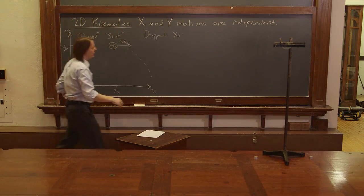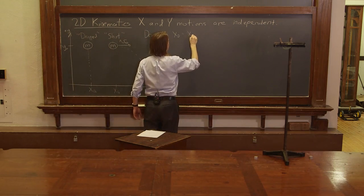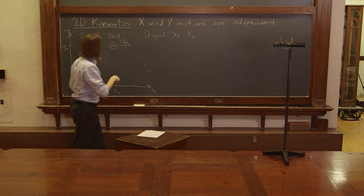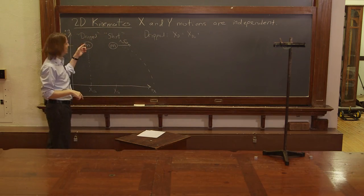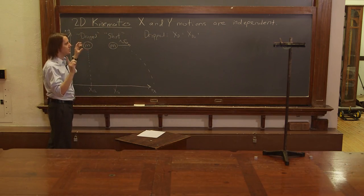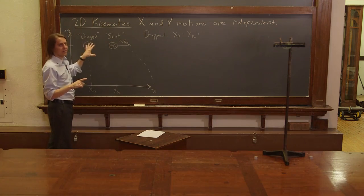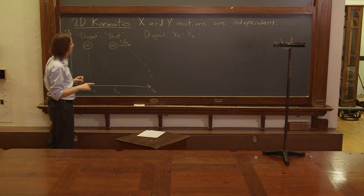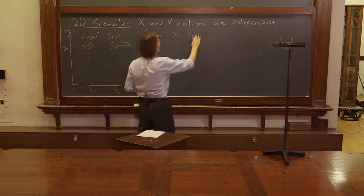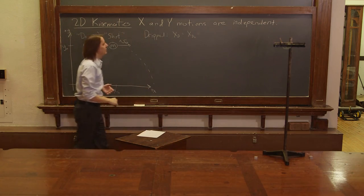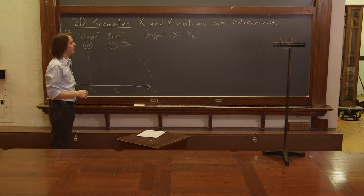So X D is equal to X D-naught plus the initial velocity in X times T, but it has no initial velocity, so that term is zero. Plus one-half A T squared term is if it's accelerating. But there's no reason for this thing to accelerate in the X. There's no gravity in the X direction. So all those terms are zero. So in X, it's really just X equals X D-naught.